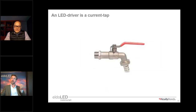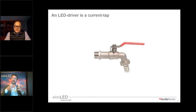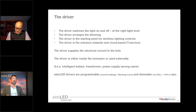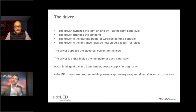Technically, what does the driver do? It acts as a current tap — the element in your luminaire that controls the amount of current flowing to the LED in order for that LED to be illuminated and dimmed. Switching it on and off, dimming it, technically acting as a tap supplying the right amount of current towards the LED — that's what the driver does. In the USA, the driver is almost always integrated into your fixture.